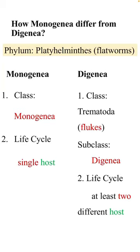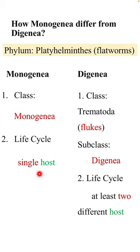How do Monogenea differ from Digenea? Class Monogenea and subclass Digenea include flatworms and they belong to phylum Platyhelminthes. The life cycle of monogenians consists of a single host, whereas the life cycle of digenians comprises at least two different hosts.